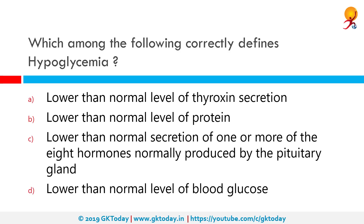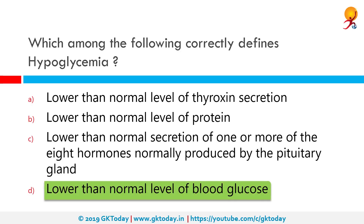Which among the following correctly defines hypoglycemia? The correct answer is lower than normal level of blood sugar. Hypoglycemia is a condition caused by a very low level of blood sugar or glucose, where your body's main energy source is less than what is required. Hypoglycemia is often related to the treatment of diabetes; however, a variety of conditions can cause low blood sugar in people without diabetes.